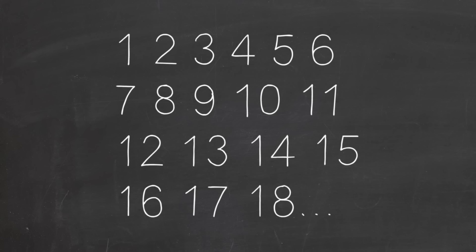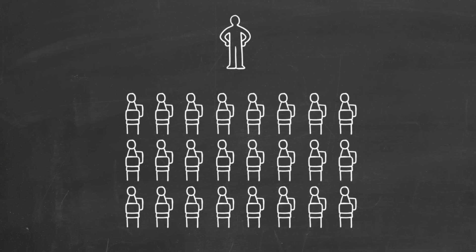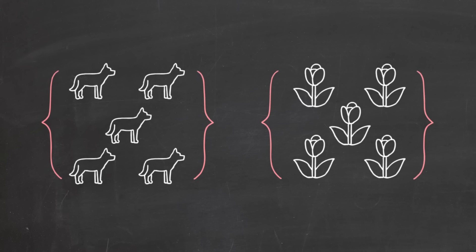But on the other hand, the even numbers are only part of the whole numbers. All the odd numbers are left over, so there's got to be more whole numbers than even numbers, right?